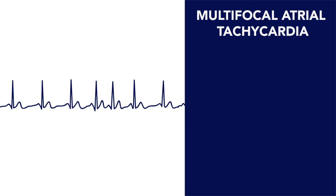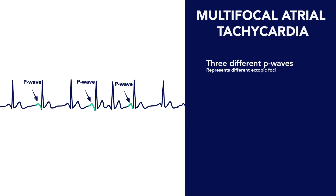So in summary, multifocal atrial tachycardias are defined by two characteristics. The first is that there should be at least three distinctly different P waves, which is the result of action potentials originating from different atrial ectopic foci. And the second is that ventricular rate should be greater than 100 beats per minute.